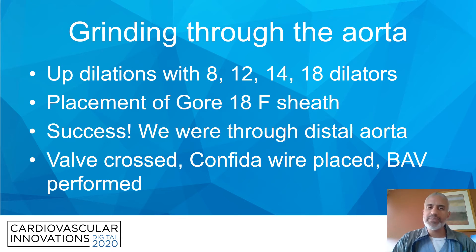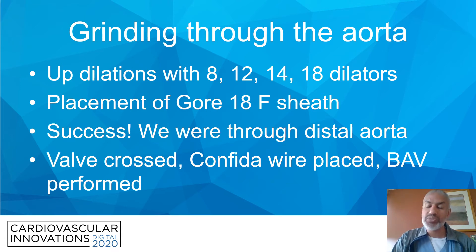We performed up-dilations with 8, 12, 14, and 18 French dilators. We then placed a Gore 18 French sheath which got us through the distal aortic lesion. So we thought we had success — we were through the distal aorta.